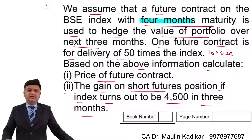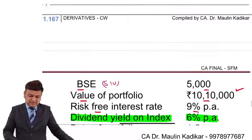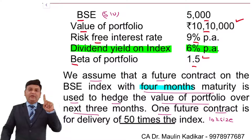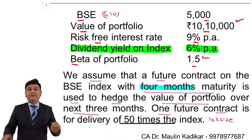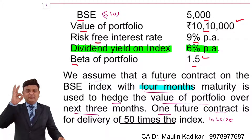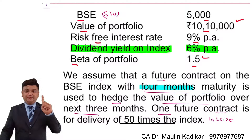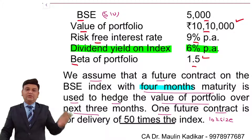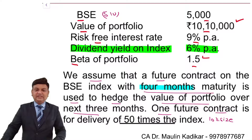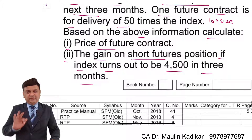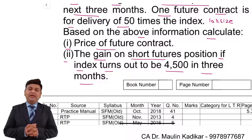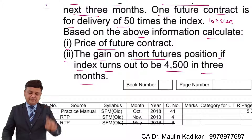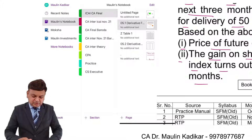Let us understand how to calculate the answer for the second part of the question. In the second part, we are required to first compute the number of futures contracts required to be entered upon for the purpose of hedging. The question does not provide the required beta, so we assume the required beta is zero. Second, we will calculate what the futures price would be one month later, because after three months the futures price is 4500 — that is not the price at which you can enter into the transaction for settlement of the futures, since the futures contract was entered for four months.